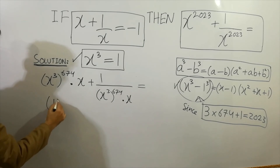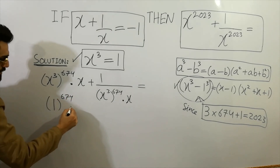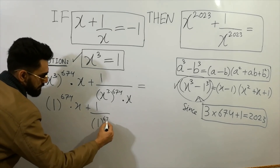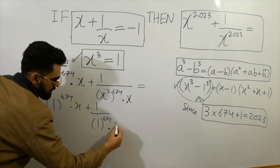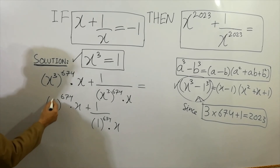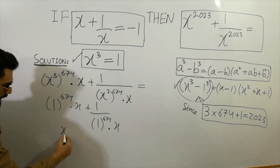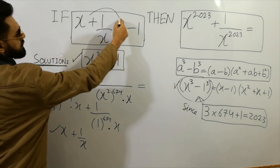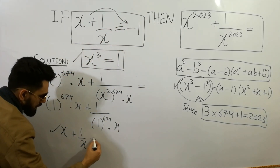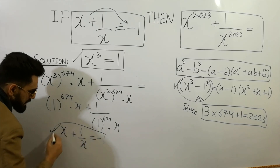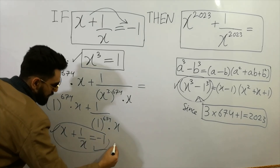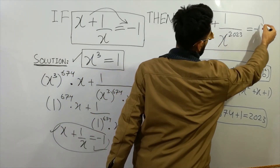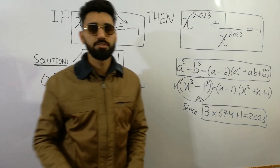Substituting x cubed equals 1, we get 1 raised to power 674 times x plus 1 divided by 1 raised to power 674 times x, which simplifies to x plus 1 over x. Since x plus 1 over x is equal to minus 1, we can substitute that value, giving us the final answer: x raised to power 2023 plus 1 over x raised to power 2023 equals minus 1.